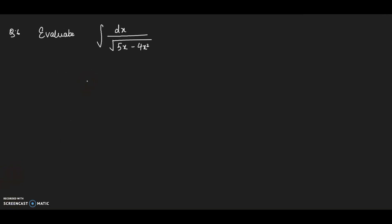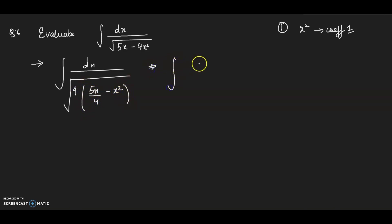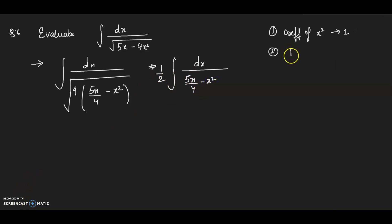Evaluate dx divided by √(5x − 4x²). Our first step is to make the coefficient of x² equal to 1. To do this I take −4 common in the denominator, giving √(5x/4 − x²). Then 1/2 comes out from the integration sign. Our next step is completing the square using difference of two squares.